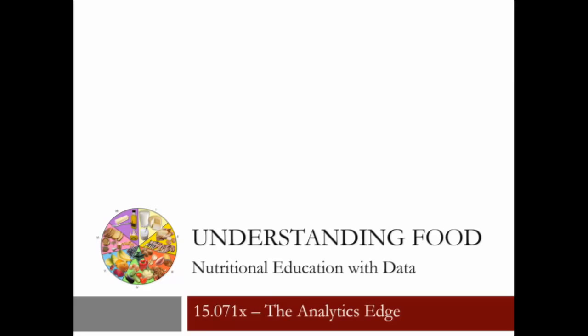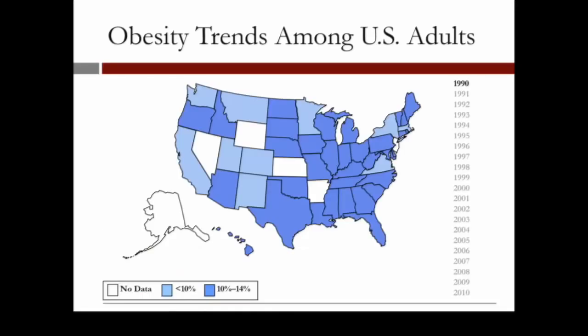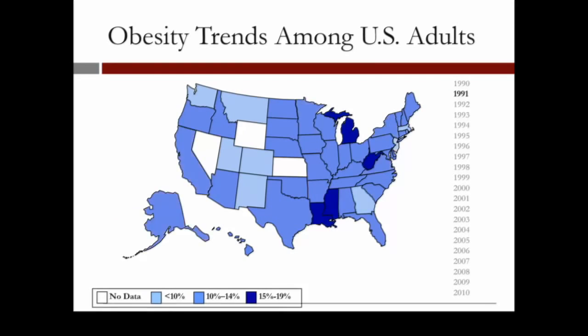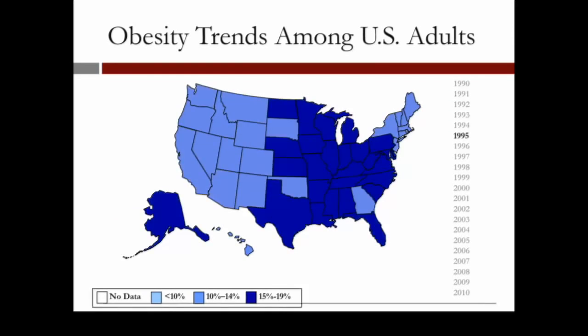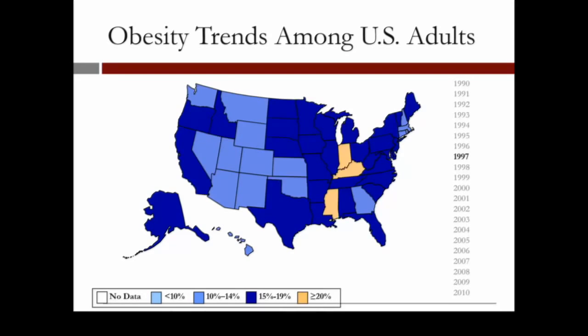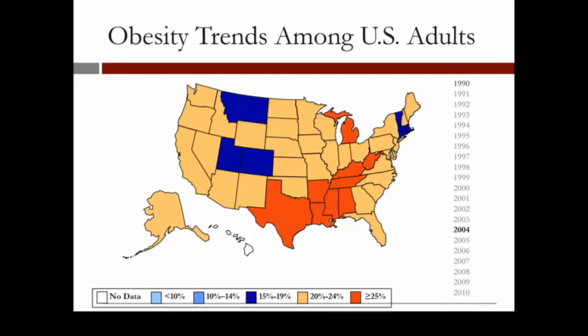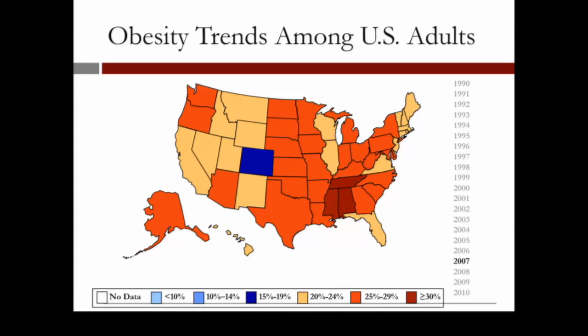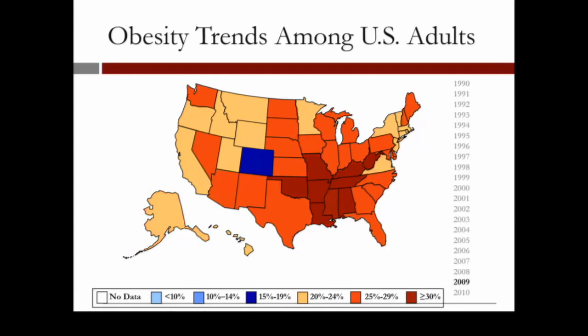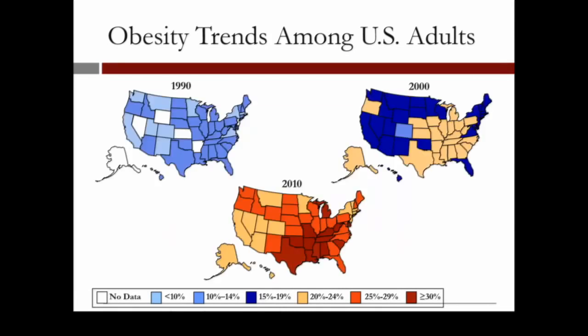Malnutrition can result in obesity, which has been rising at an alarming rate. In the US, while all states in 1990 had less than 14% obesity, figures started increasing and by 2000 half of the country had more than 20% of its population obese. The trend continued and in 2010 all states had at least more than 20% obese, with many states reaching more than 35%.